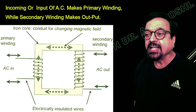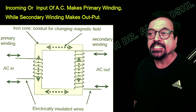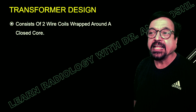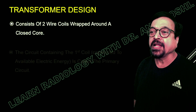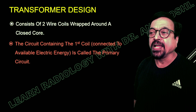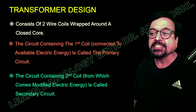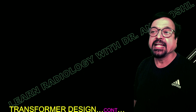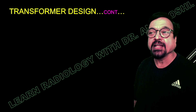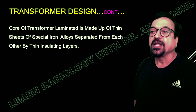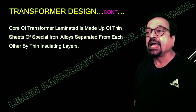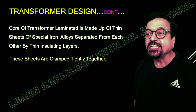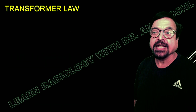The wires between primary and secondary are insulated and not directly exposed to each other. There is also an iron core of square type construction. The transformer design consists of two wire coils wrapped around a closed core. The circuit containing the first coil connected to available electricity is the primary circuit; the circuit containing the second coil from which required supply comes is the secondary. The core lamination is made up of thin sheets of special iron alloy separated by insulating layers, clamped tightly together.